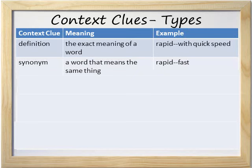The next type of context clue we'll learn about is synonym. A synonym is a word that means the same thing. For example, a synonym of rapid is fast. Fast and rapid mean the same thing.